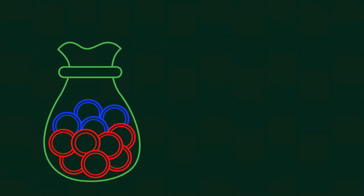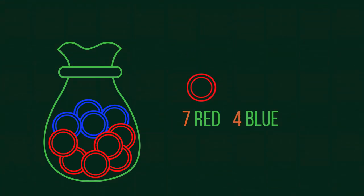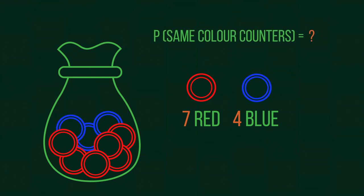Here's our question. A bag contains 11 counters. There are 7 red and 4 blue. One is selected at random and not returned. A second is then selected. What's the probability that they are the same color? If you want to have a go at this question, pause now. If you want to see how to set it up and then have a go, we will show you now.